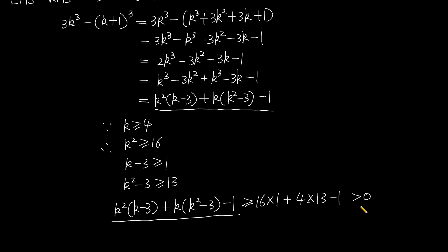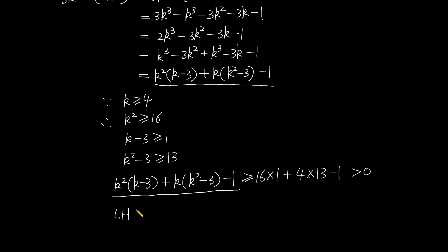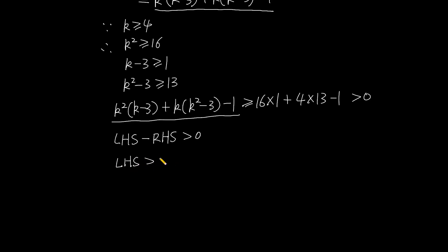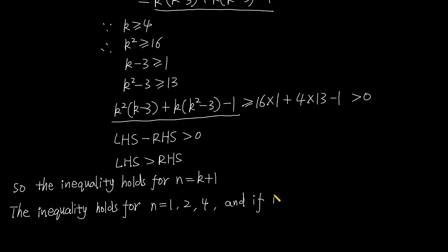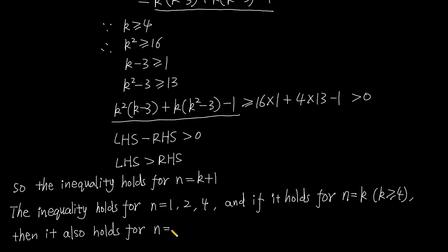Therefore this expression is larger than 0, so left hand side minus right hand side is larger than 0, meaning left hand side is larger than right hand side. The inequality holds for n equals k plus 1. The inequality holds for n equals 1, 2, 4, and if it holds for n equals k where k is larger than or equal to 4, then it also holds for n equals k plus 1.